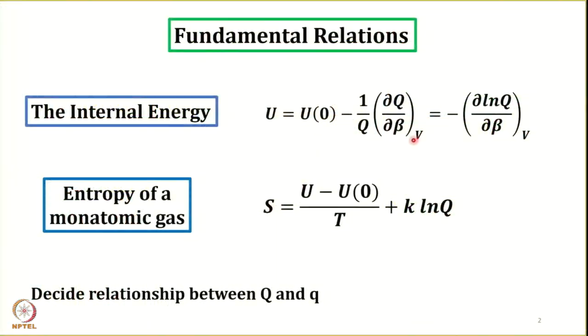We have earlier derived expressions connecting internal energy with canonical partition function. We have also derived an expression for entropy of a monatomic gas: S = (U - U₀)/T + k ln Q, where capital Q refers to the canonical partition function.